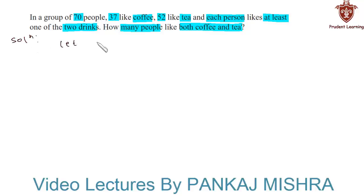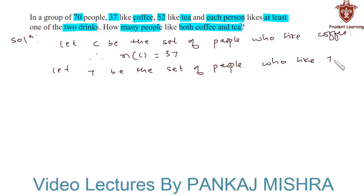Let C be the set of people who like coffee. Therefore, we can say that the number of elements in C is equal to 37. And let T be the set of people who like tea. Therefore, we have the number of elements in T equals 52.